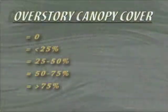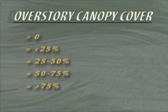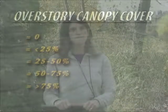Overstory canopy cover is another site characteristic. Using a bird's eye view perspective can help determine the overstory canopy cover. We use a coarse measurement to help aid in this. Our particular site would fall under the category between 50 to 75 percent canopy cover.